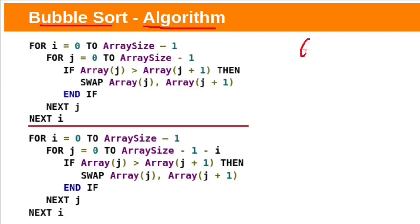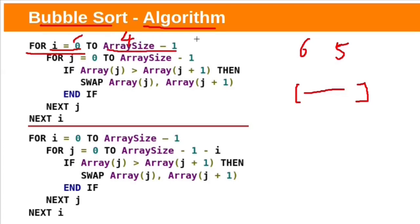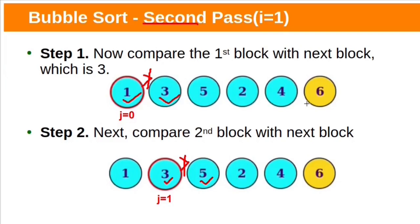The bubble sort procedure can be expressed as an algorithm. In the example we had 6 elements and it performed 5 passes. Assuming elements are stored in an array, take a for loop with i from 0 up to array size minus 1 — so array size minus 1 passes will be performed, meaning 5 passes. Within each pass, each element at index j is compared with the element at index j+1. If element at j is greater than element at j+1, swap those two elements. After the first pass, one element is already sorted, so j need not go all the way to index 4 — we can terminate the inner loop when j reaches index 3.